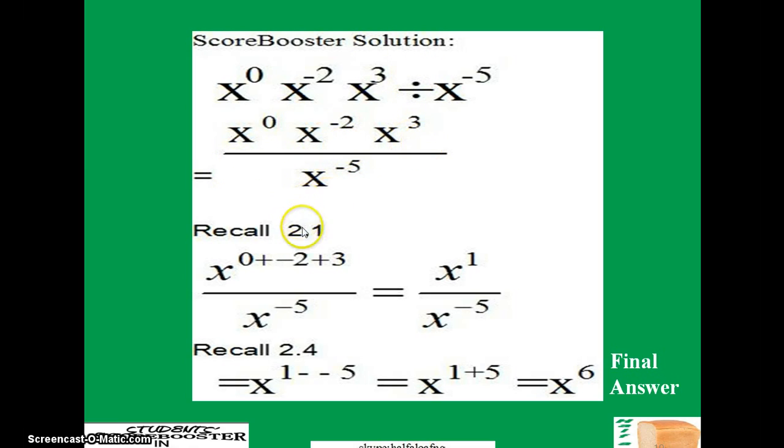Then let's recall the first law. The first law says if you have two or more bases, but they are all the same like x, you just pick one of them and just add the exponents. So you have 0 plus minus 2 plus 3 divided by x raised to power minus 5. This equals, if you add the whole of what you have here, you have x raised to power 1, and this is still x raised to power minus 5.